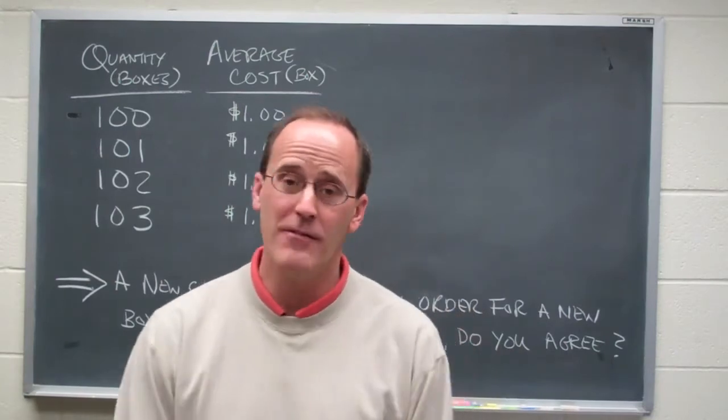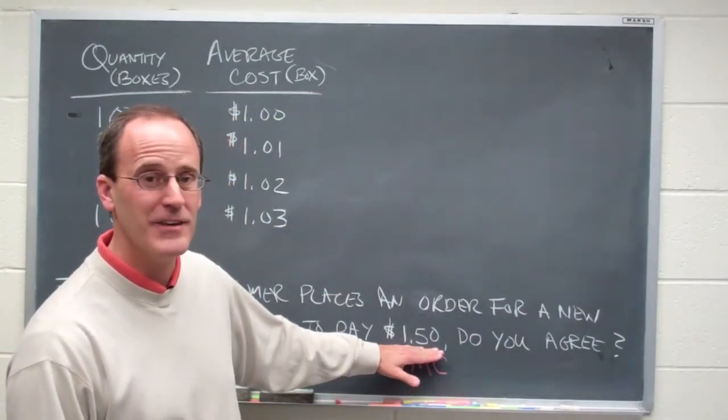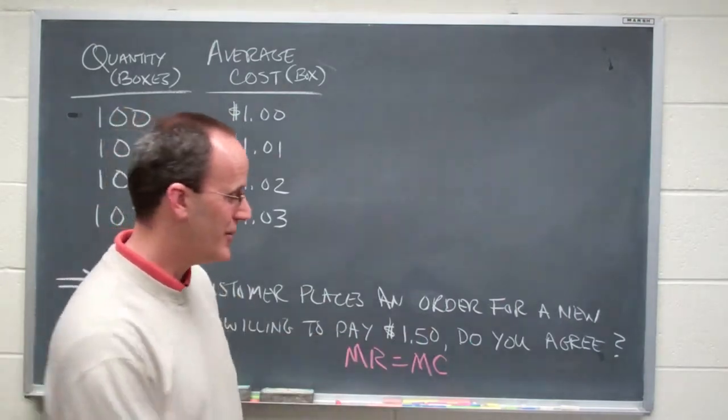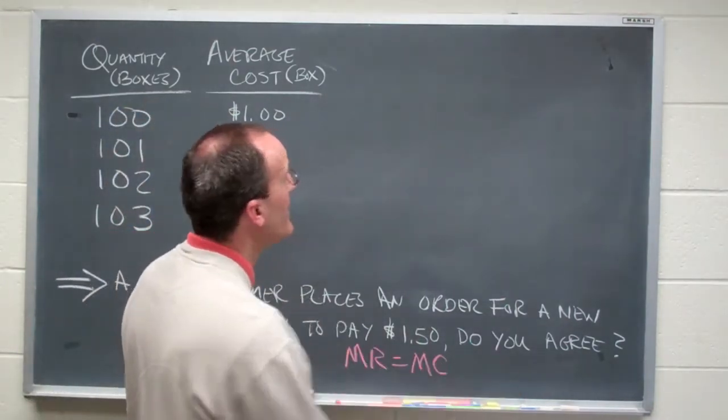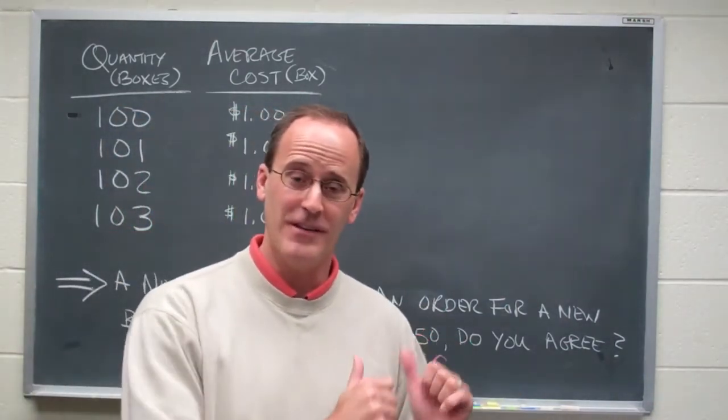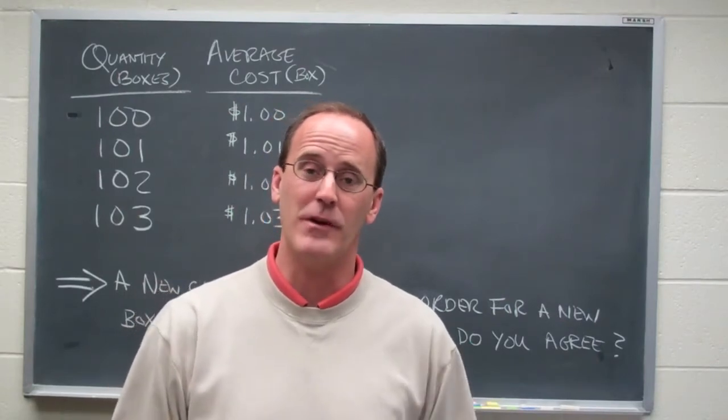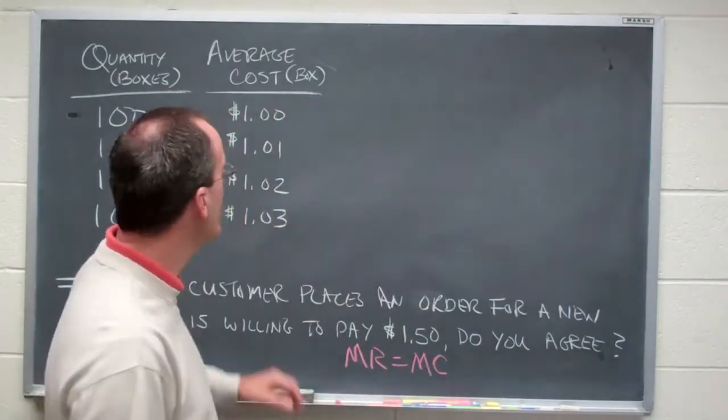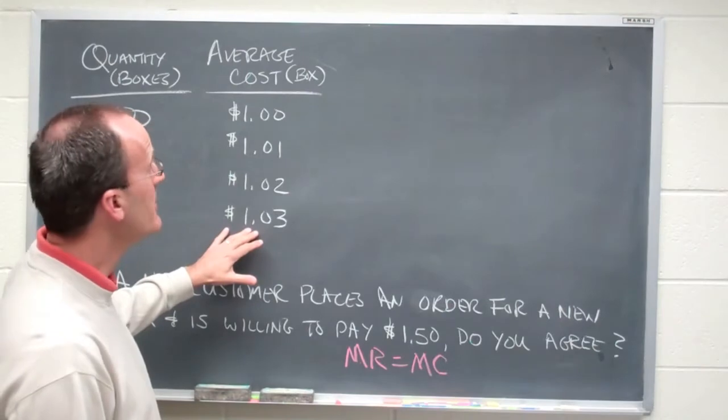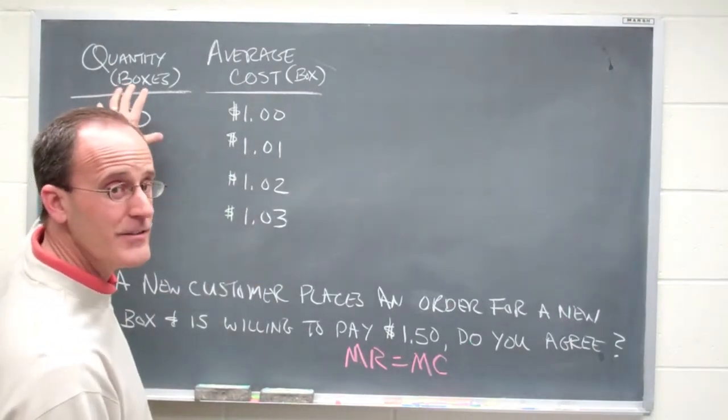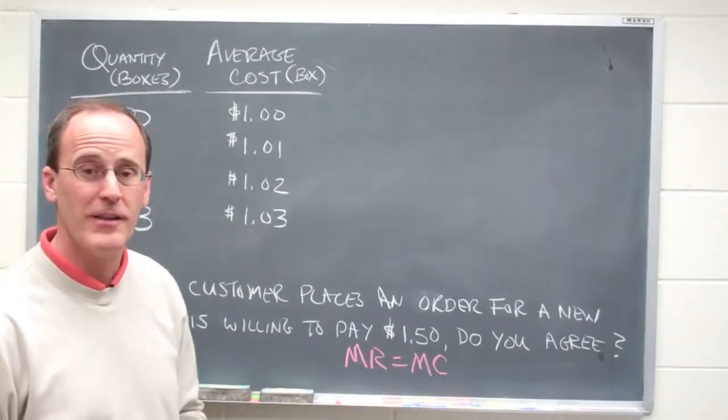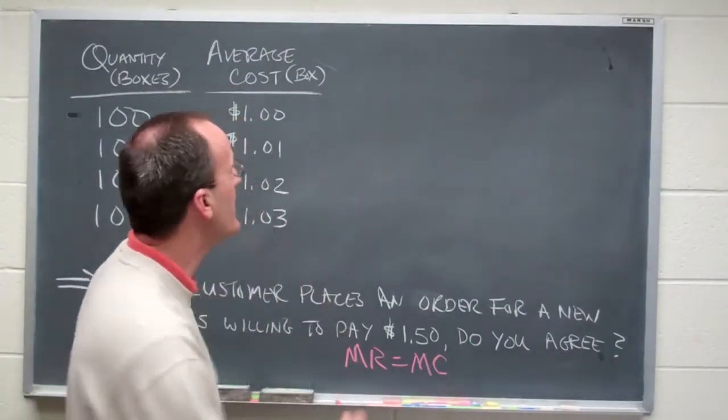Now I know marginal revenue. Marginal revenue is right here, it's a dollar fifty. The question is what's the cost look like? In order to figure this out, we'll have to take the information on the table and determine where we can find marginal cost from that data. So we've got average cost here. Let's take the number of boxes that we've produced and multiply that by the average cost to come up with the total cost.